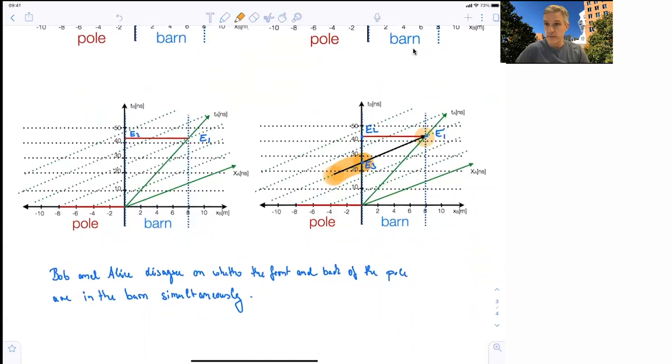So Bob and Alice disagree on whether the front and the back of the pole are in the barn simultaneously. That's where the situation becomes contradictory. They don't agree that two events which happen at the same time in their reference frame, in Bob's reference frame, occur at the same time in Alice's reference frame.